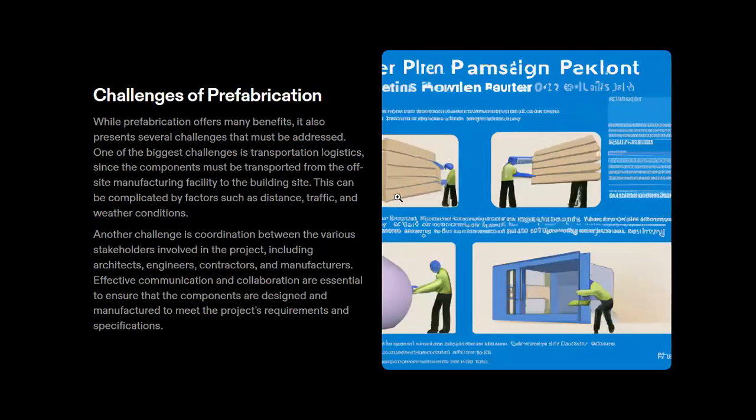Now the challenges of prefabrication. While prefabrication offers many benefits, it also presents several challenges. One of the biggest challenges is transportation logistics, since the components must be transported from the off-site manufacturing facility to the building site. This can be complicated by factors such as distance, traffic, and weather conditions. Another challenge is coordination between the various stakeholders involved in the project, including architects, engineers, contractors, and manufacturers. Effective communication and collaboration are essential to ensure that components are designed and manufactured to meet project requirements and specifications.